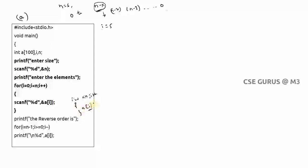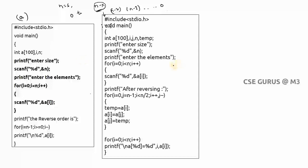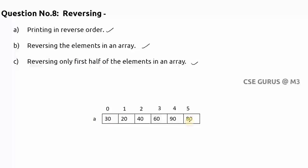Now for the second question — reversing the elements in an array. The scanning part is the same. To reverse, consider: 30 should go to the last position, 80 should come to the first, 20 swaps with 90, and 40 swaps with 60. For six elements, only three swaps are needed. So for n elements, n/2 swappings are sufficient to reverse the array.